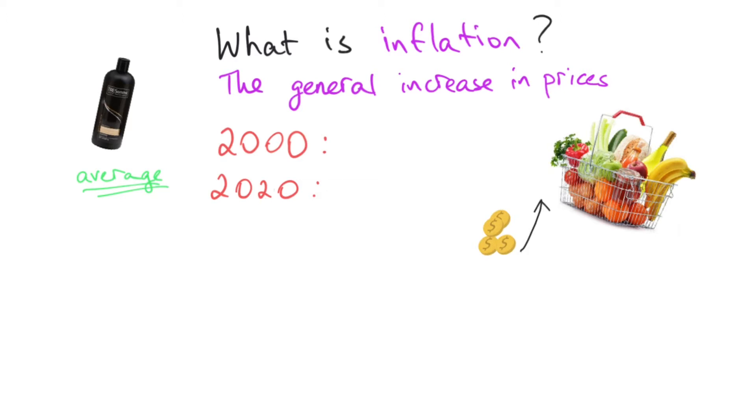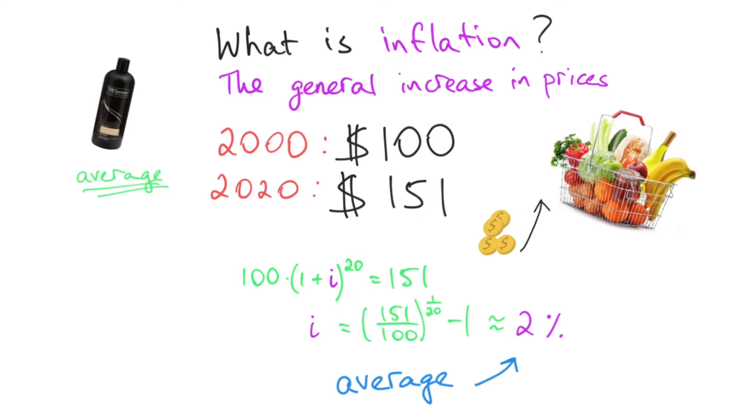Let's look at an example. In the year 2000, if you had 100 US dollars, in 2020, you would need 151 US dollars to buy the exact same thing, which is pretty crazy. So let's calculate the US dollar inflation rate. We have 100 times (1 plus I) to the 20th power equals 151. We don't know I, that's what we're looking for. If we rearrange the equation, we see that I equals (151/100) to the power of 1/20 minus 1, and that roughly equals 2%. So the average yearly inflation rate of the US dollar is 2%.